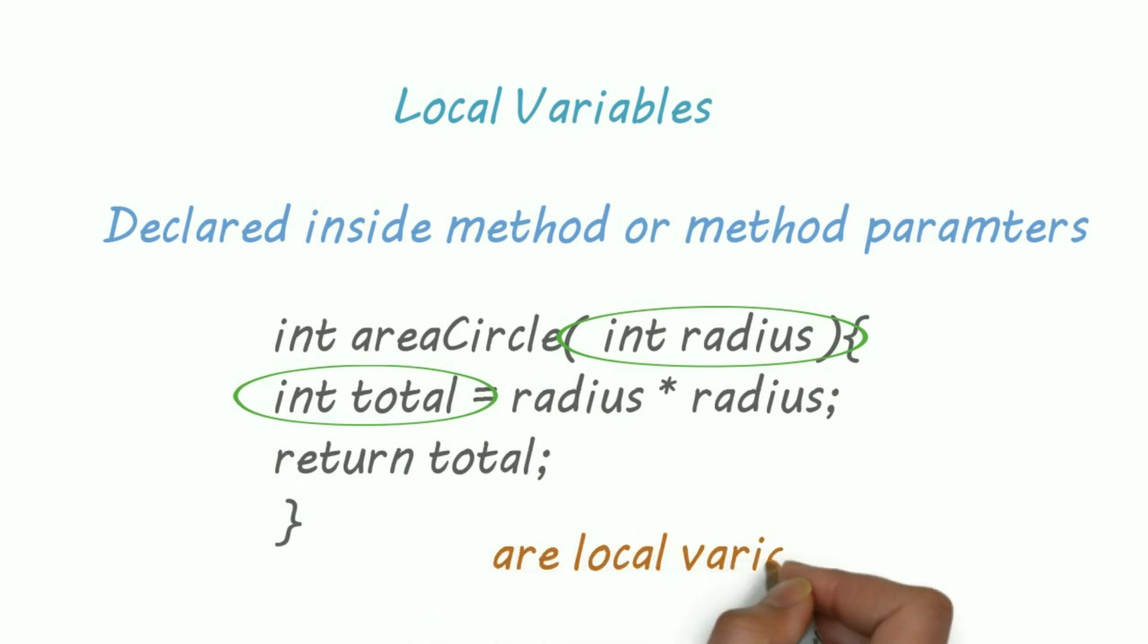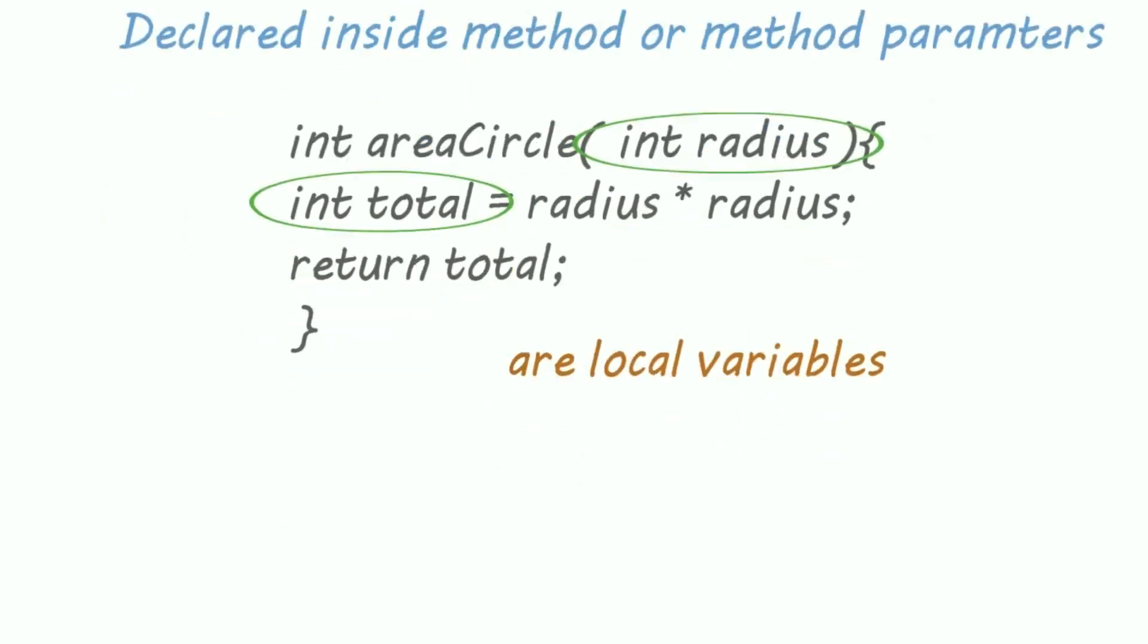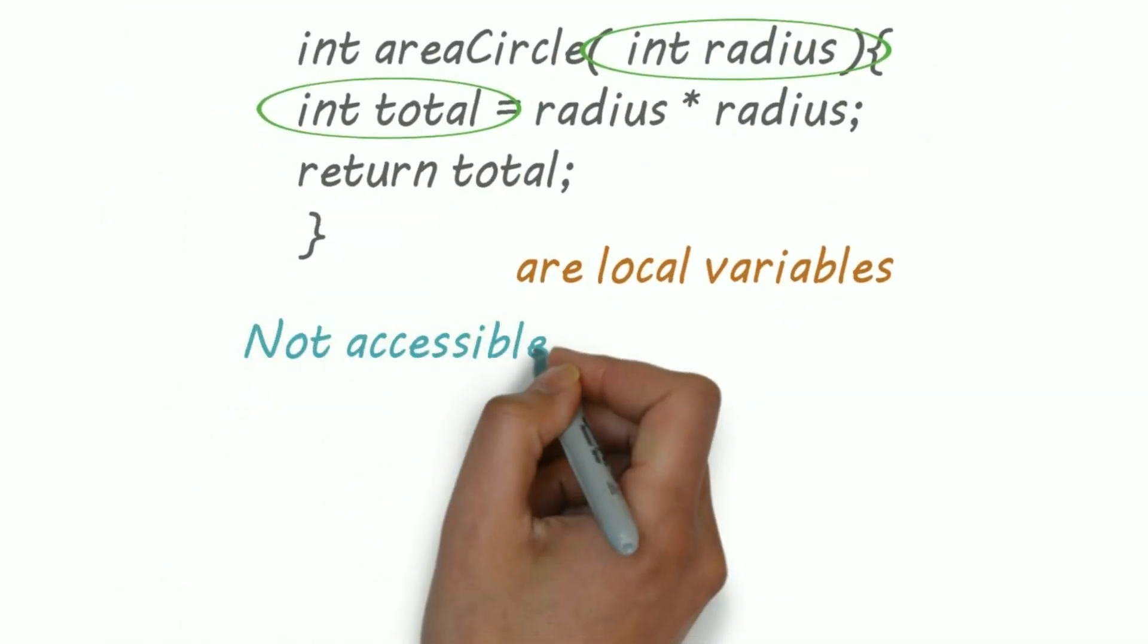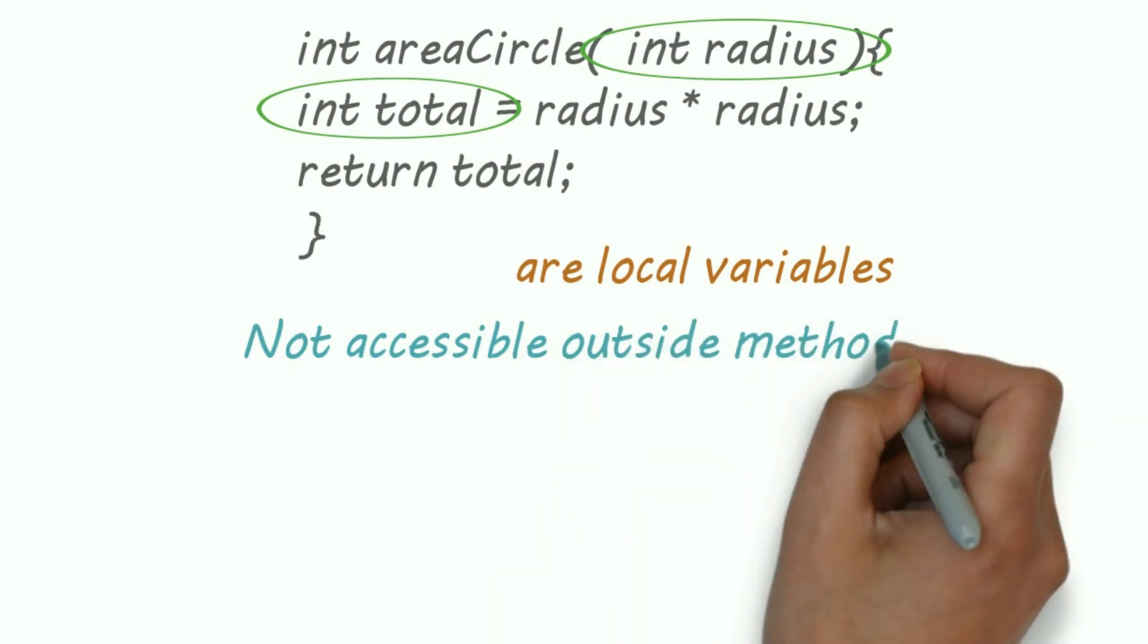Now, let's see properties of local variables. These are not accessible outside methods and they don't have any default value.